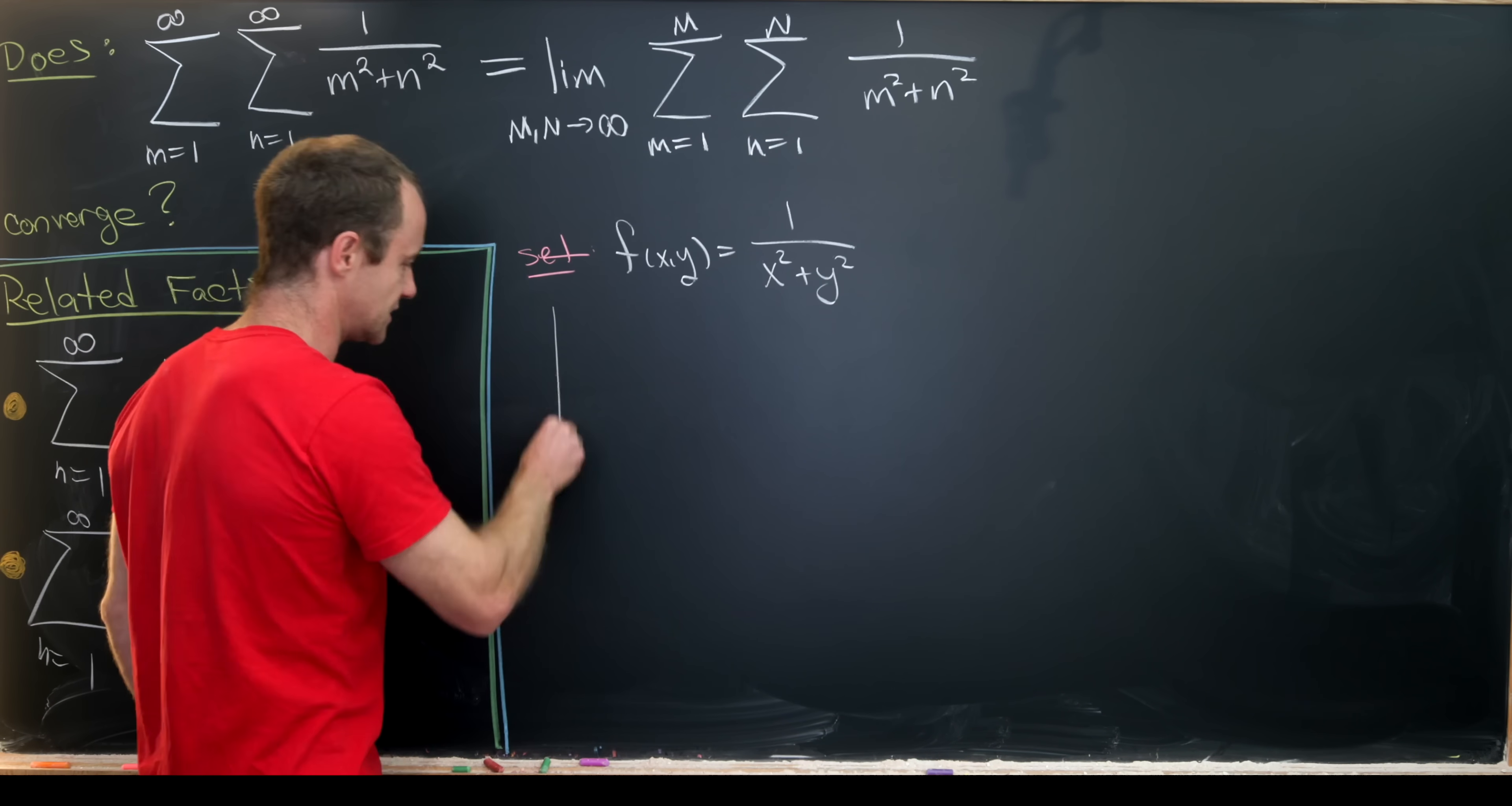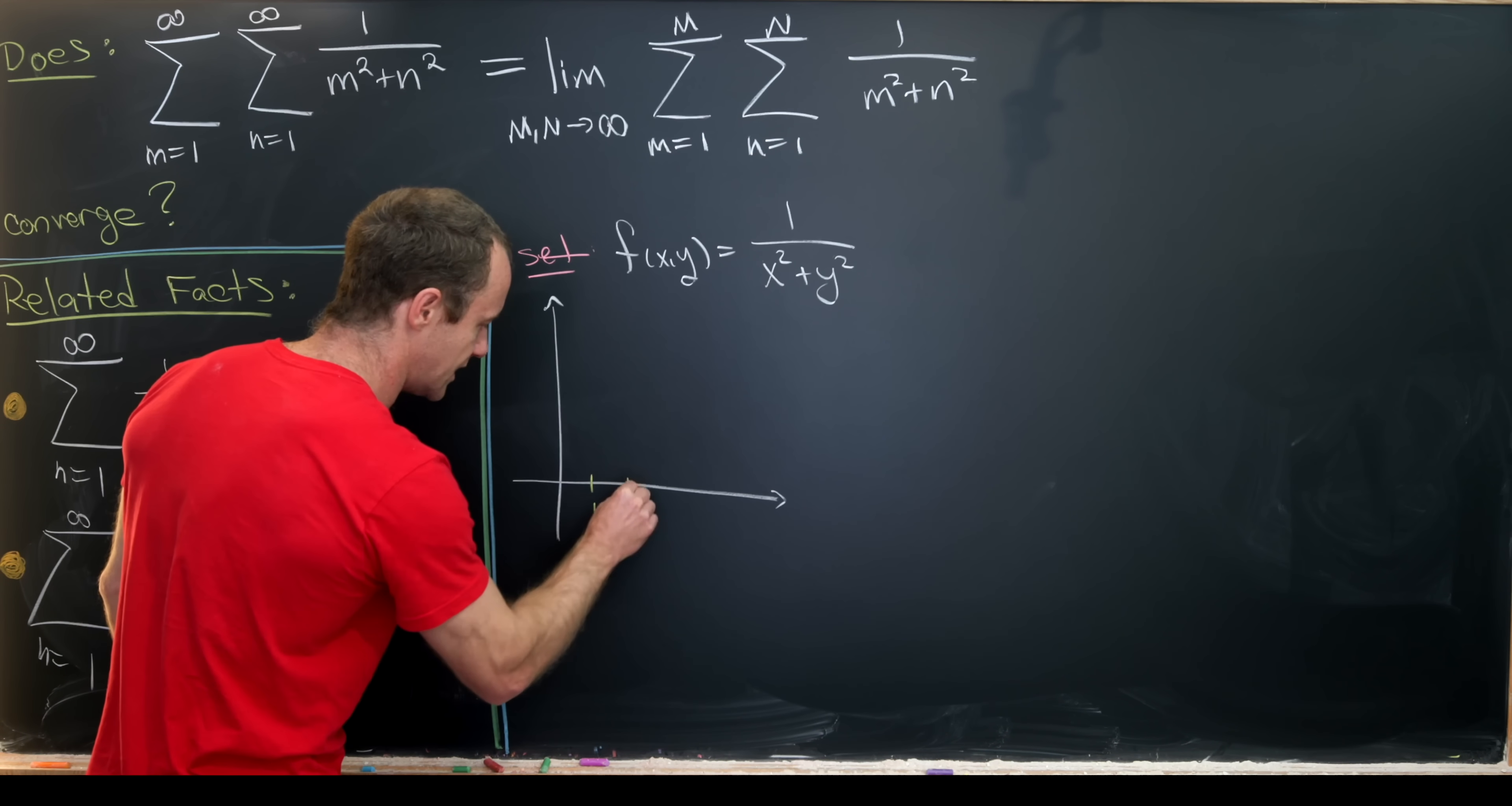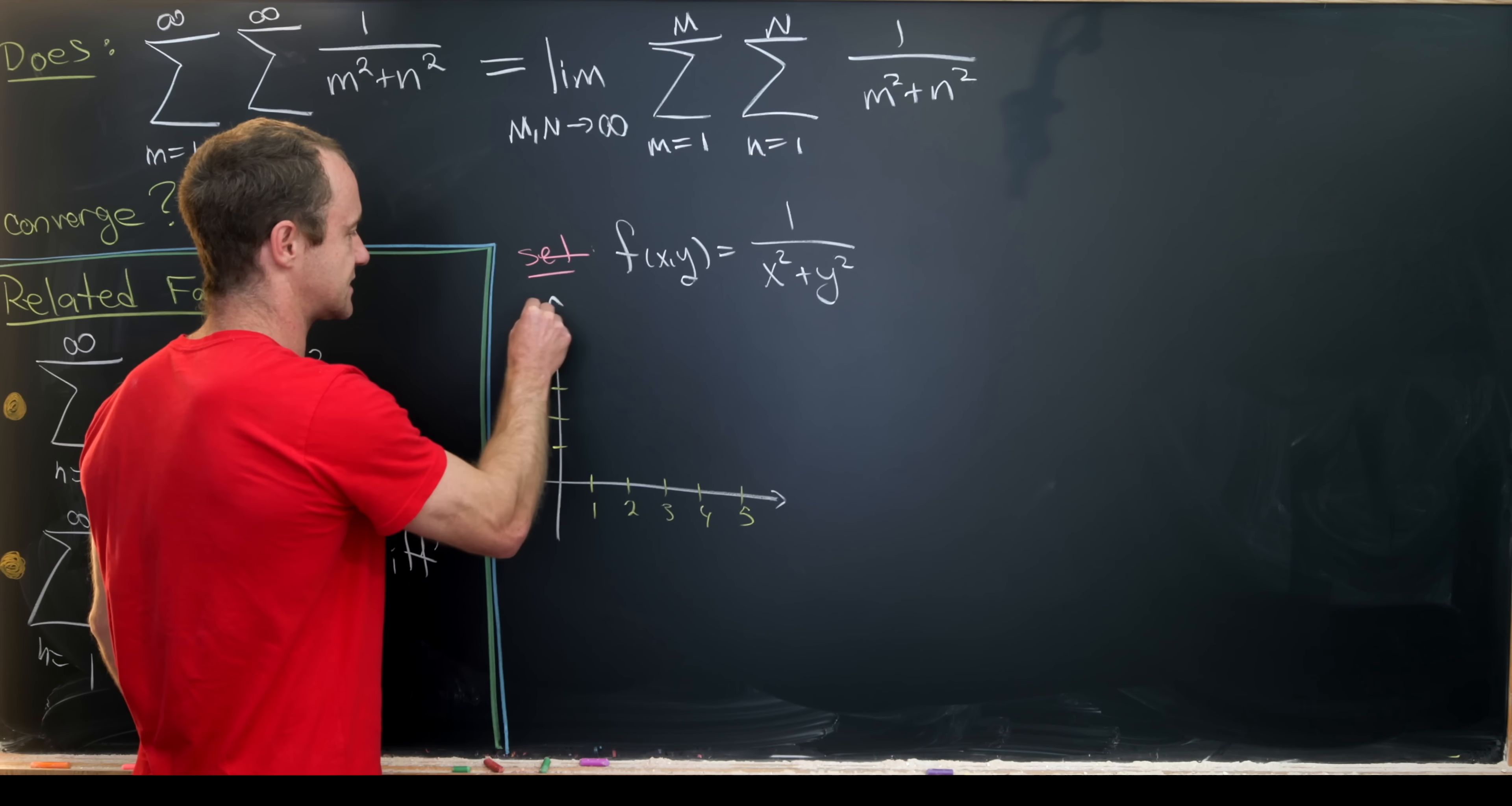And let's also look at what's happening in the xy plane where we would integrate this function. So let's maybe get 1, 2, 3, 4, 5. So the natural numbers along the x and the y axis.